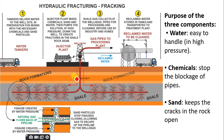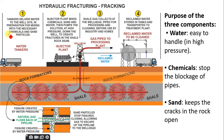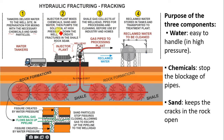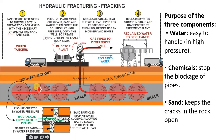For a more detailed explanation: first, a tanker delivers water to the well site in preparation for mixing with the necessary chemicals and sand. At the injector plant, the chemical, sand, and water are mixed, then the solution is pumped at high pressure down the well to create a fracture in the shale — the impermeable rock.